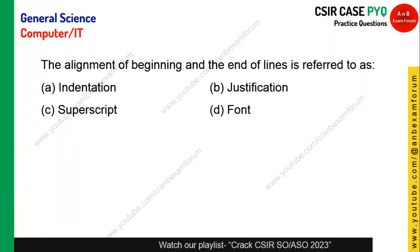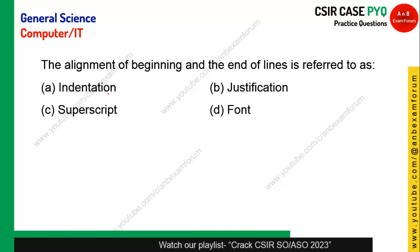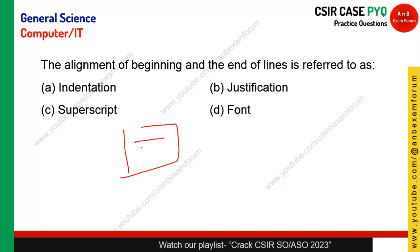From MS Word: the alignment at the beginning and at the end of a line is referred to as indentation, justification, superscript, or font? When you are aligning text at both the beginning and the end of a line, it is called justification — not indentation. Option B is the right answer.